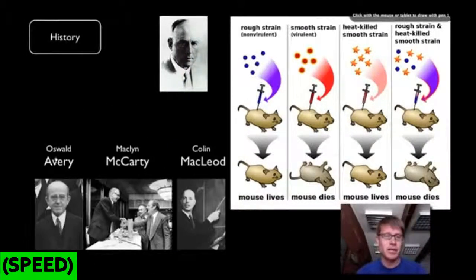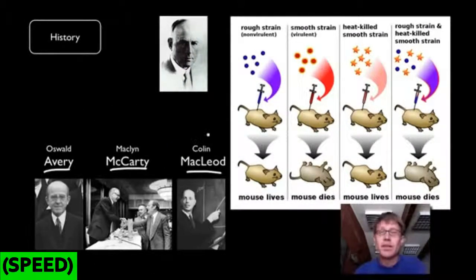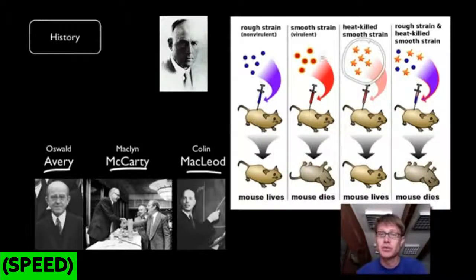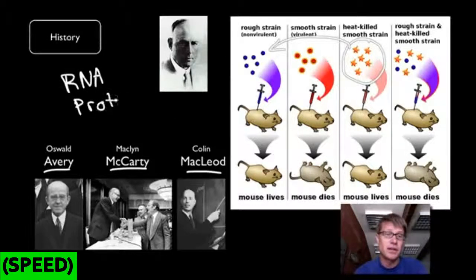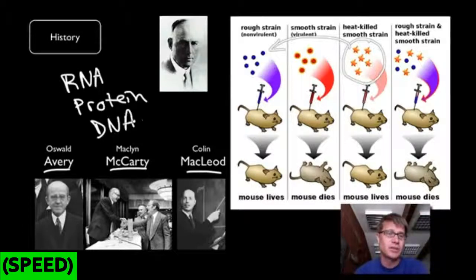So the first step came through the Avery McCarty McLeod experiments. And this is in the 30s and 40s. And what they did is looked at Frederick Griffith's experiment, and they tried to figure out what was this transforming factor, what was being transferred from these heat-killed smooth strains over to these rough strains. And so they broke down the bacteria. They then isolated the major molecules inside that. And so what they had was RNA. They also had proteins. And then the last thing that they found was DNA. And we knew what DNA was. We'd known it for, you know, 50 years before then. And so what they then used was enzymes that broke down each of these, and then they'd see if you could transform the bacteria again.